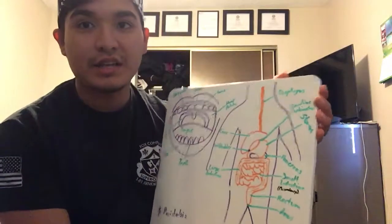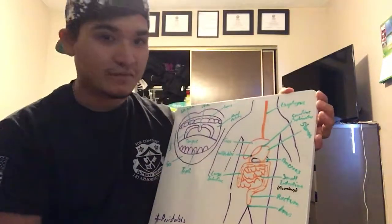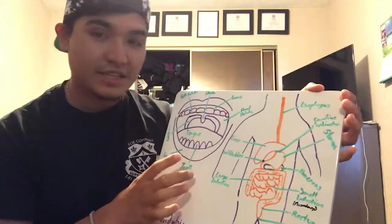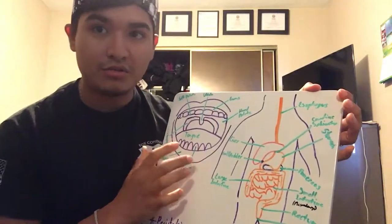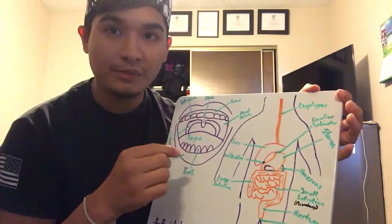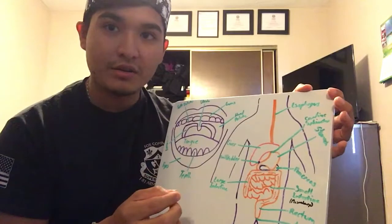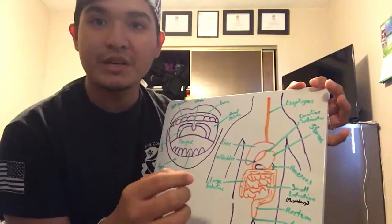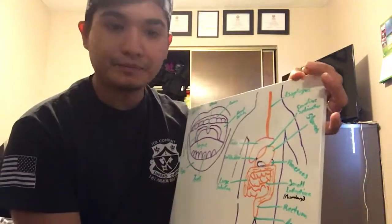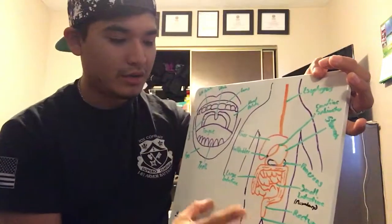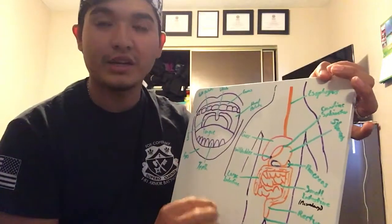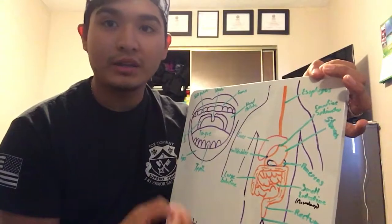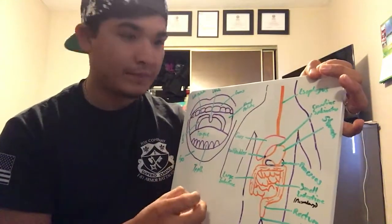My name is Luis Salinas and this is a digestive system. The mouth is the beginning of the digestive system, and in the mouth you chew food in order to break it down so it's easier to digest. Then the saliva mixes with the food in order to begin the process of breaking it down into a form so our body can absorb and use it.